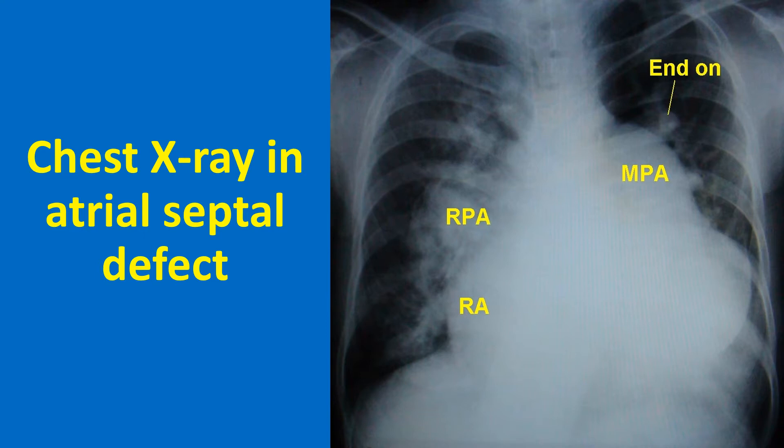All features suggest a large secundum ASD with a large left-to-right shunt producing severe pulmonary hypertension. Cardiomegaly on chest X-ray is suggestive of ASD in Eisenmenger syndrome, while it is unlikely in VSD and PDA Eisenmenger.